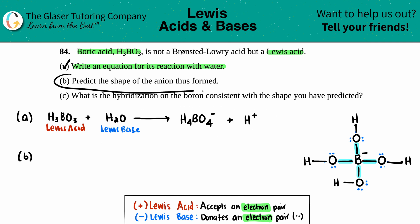Part (b): predict the shape of the anion—the anion is the negative charge, which is the boron. The shape always comes from the central atom. In this case, if I'm looking at this compound, the central atom is the boron in the middle. I just have to zoom in on the boron.